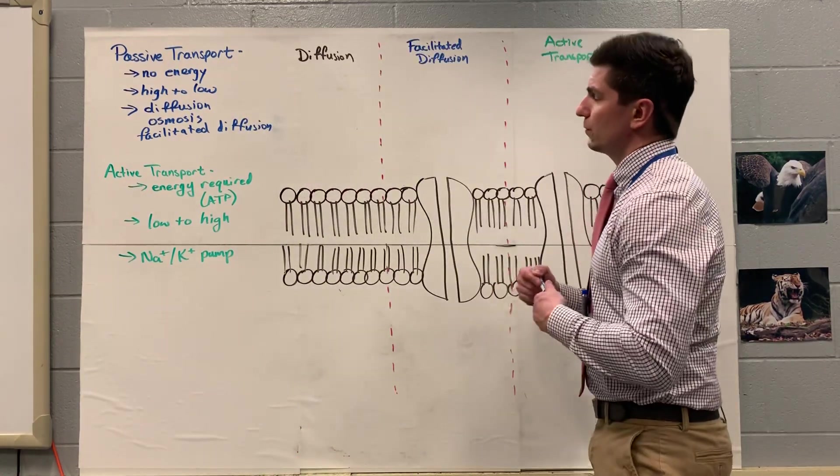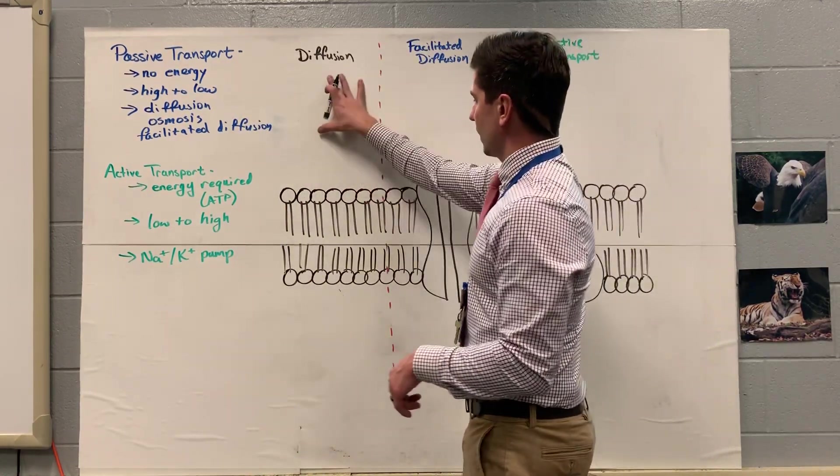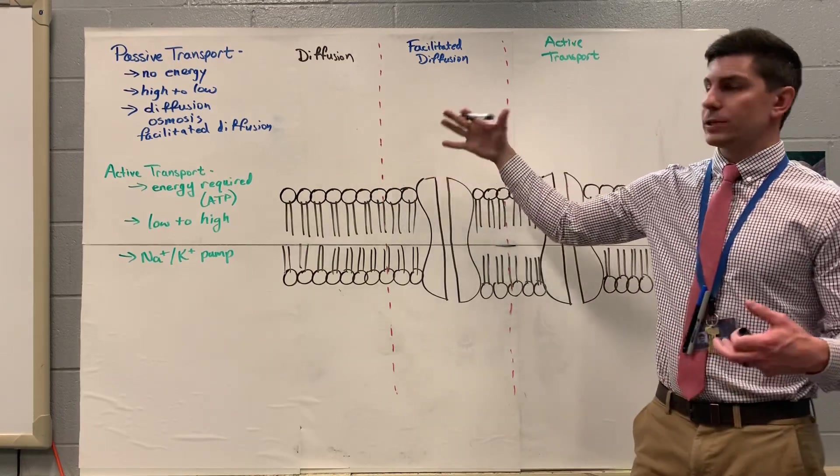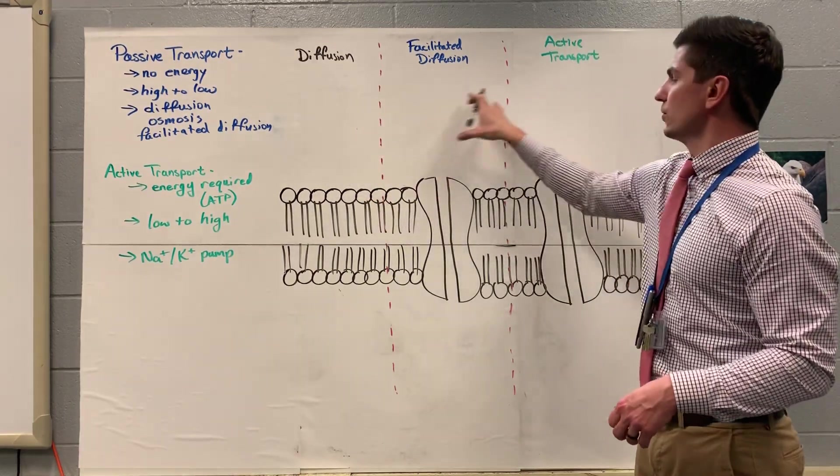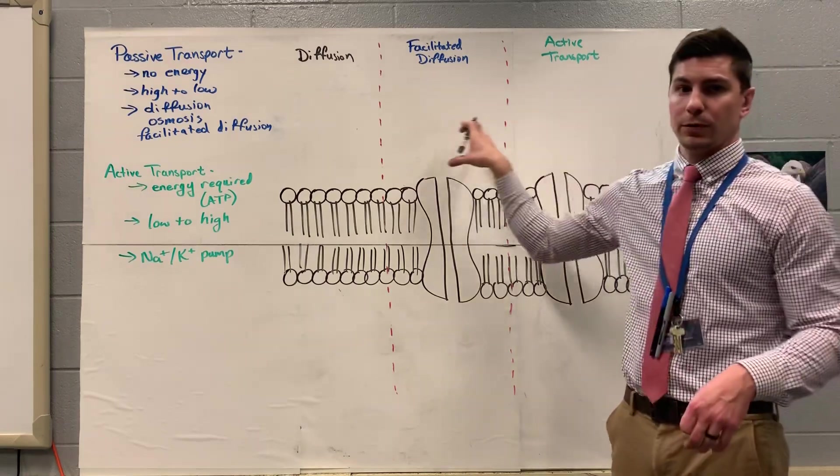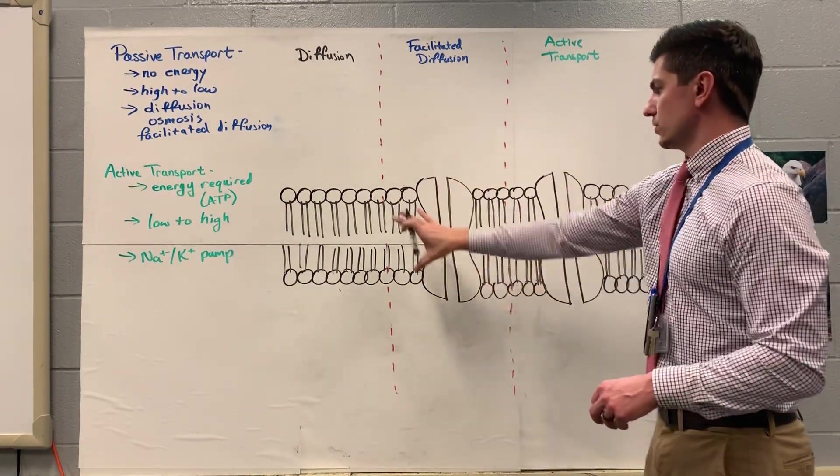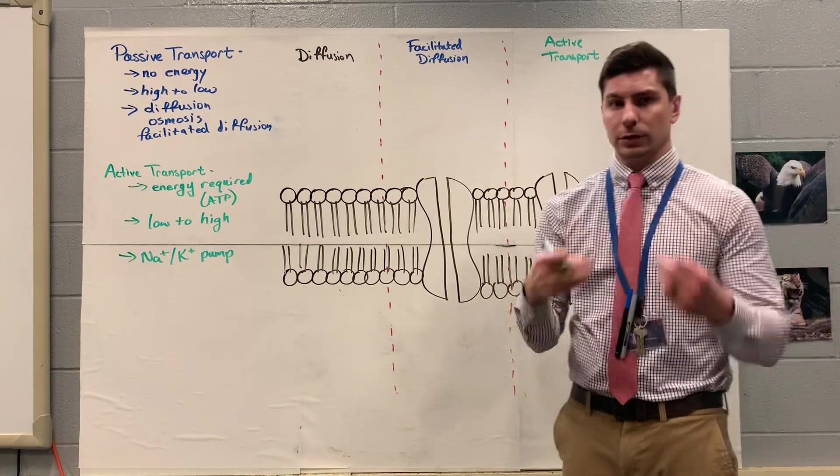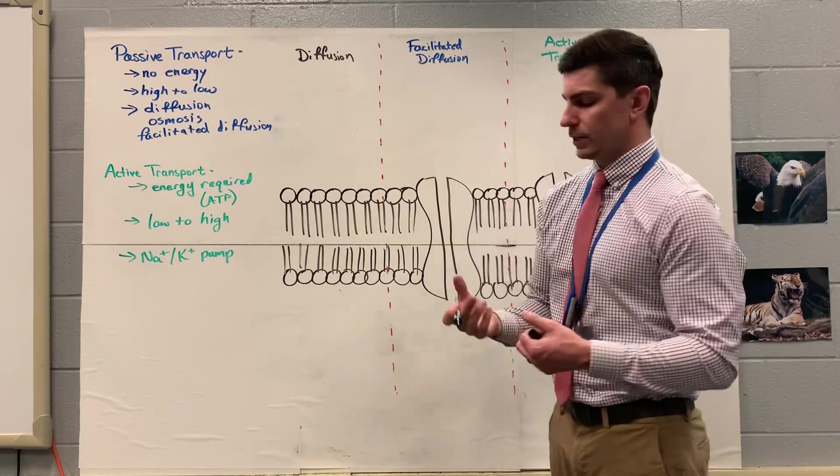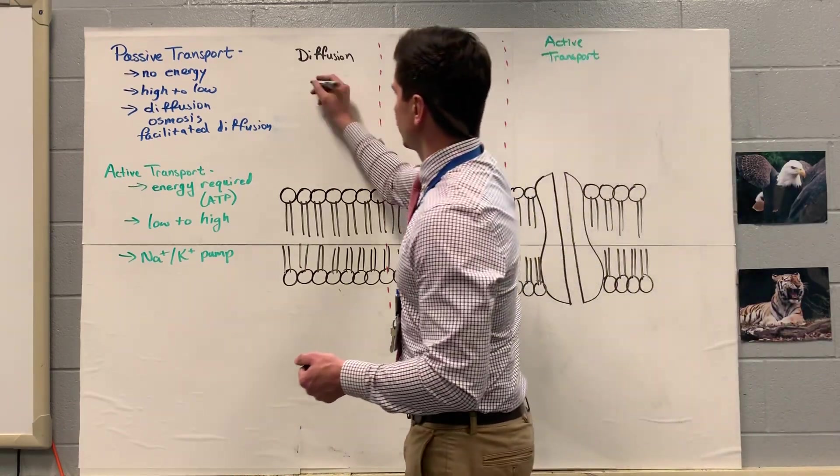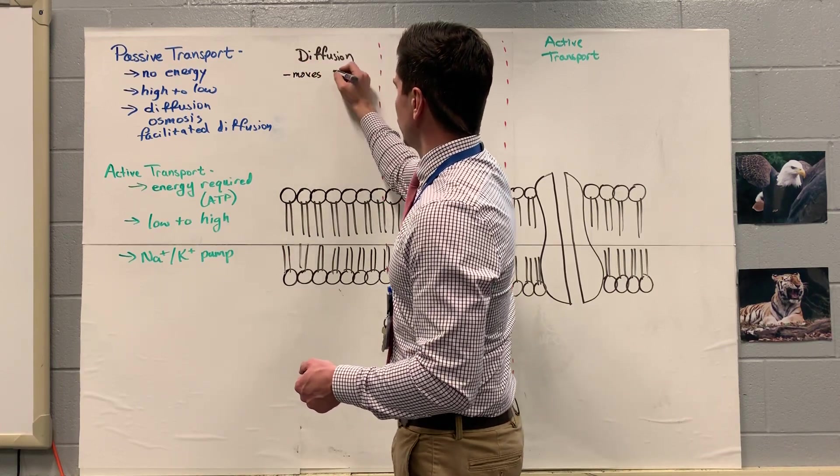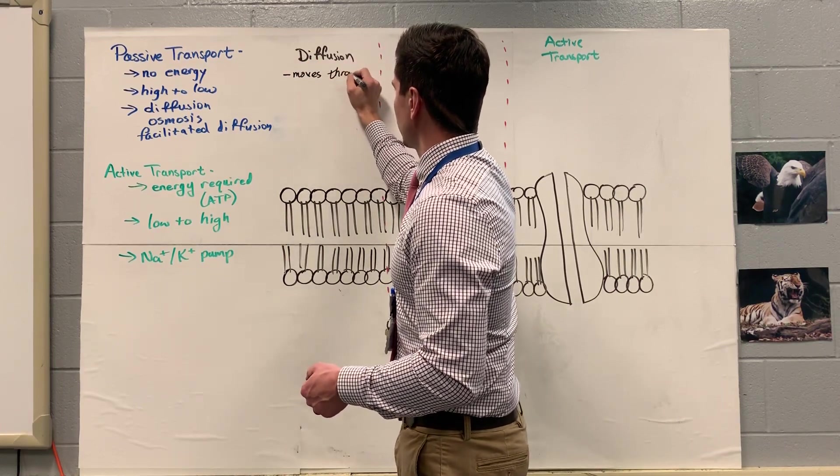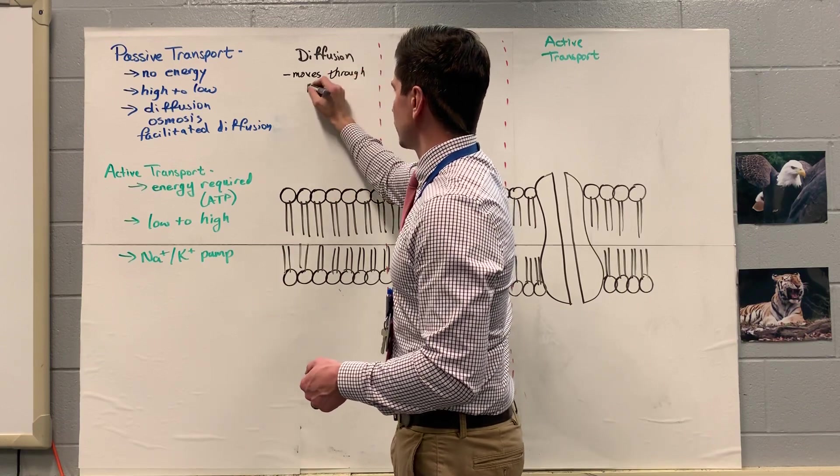So to start off, let's go over diffusion. I mapped out this. So we have three different areas here. We have a diffusion area, a facilitated diffusion area, and an active transport area. But just so you guys know, this is all part of the cell membrane. So I just took a little section of the cell membrane out. So to start off with diffusion, the particles are going to move through the phospholipids of our cell membrane.